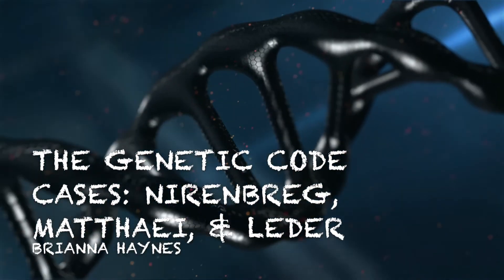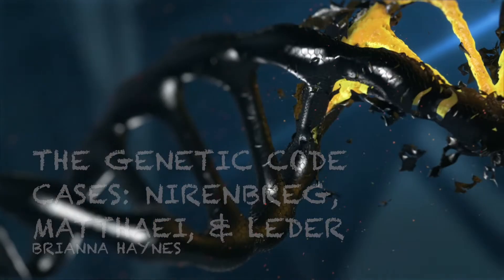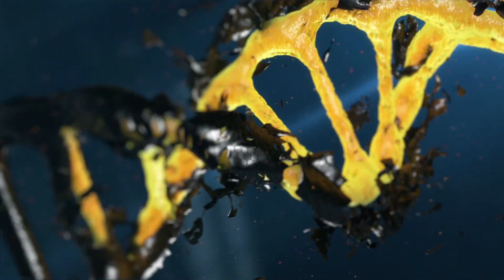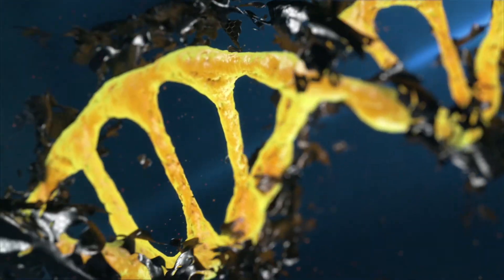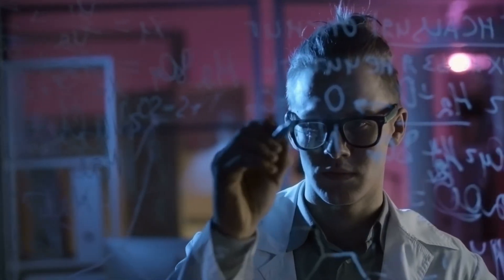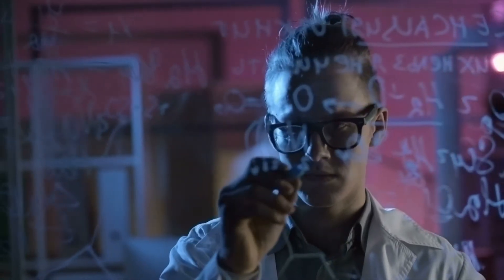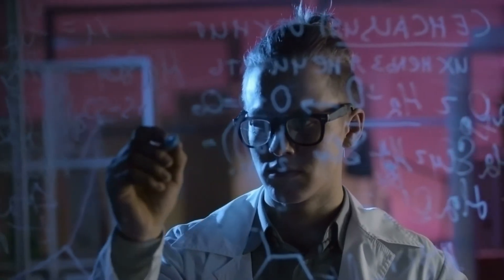Today I will be discussing the Nirenberg and Matthaei experiments. After the discovery of DNA structure in 1953 by Watson and Crick, scientists began to wonder about the relationship between the sequences of nucleotides on mRNA to the sequence of amino acids produced in the polypeptides, otherwise known as the genetic code.